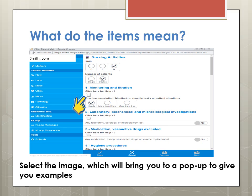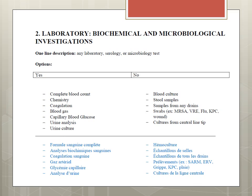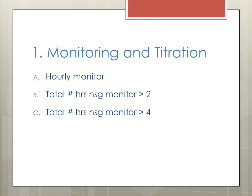What do the items actually mean? In total, there are 23 questions. Each question has a small image that you can click on for more information. For example, clicking on the image for question 2 will give you examples. Question 2 is part of the 18 yes or no questions, where you will pick yes or no — for example, yes, you sent a complete blood count for your patient. Question 1 is Monitoring and Titration, which has multiple options: A, B, or C based on your nursing workload.